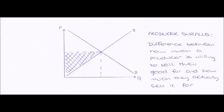The bottom of the supply curve is the lowest price at which producers are willing to sell their good, and the equilibrium price is the price they actually sell their good at. Therefore, the shaded area represents the difference between the two, and therefore represents producer surplus.